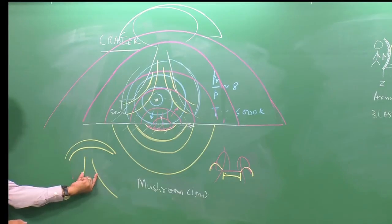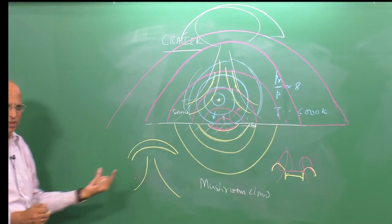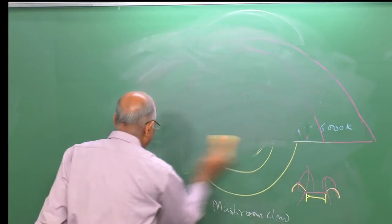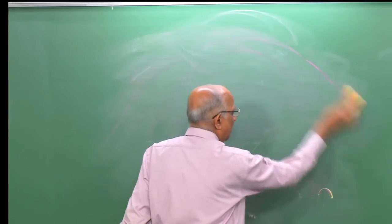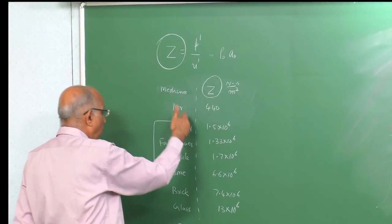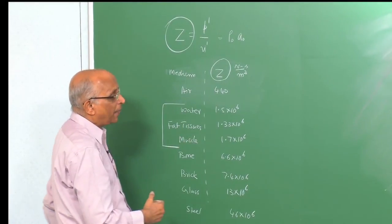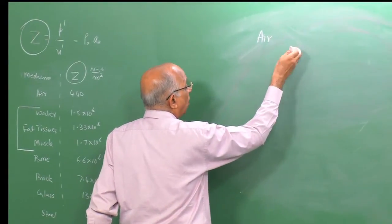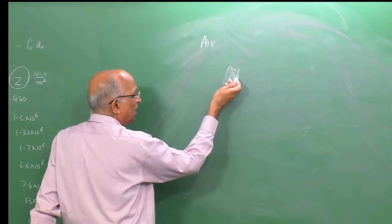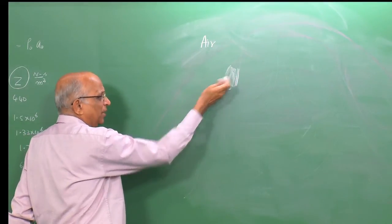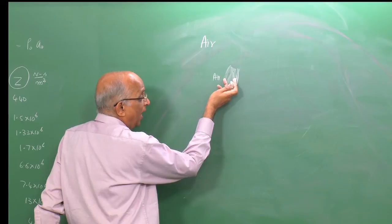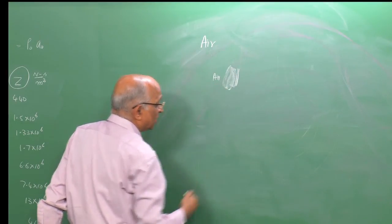An explosion above the surface produces a mushroom cloud — this is the signature of an explosion. Now, putting impedances together for the human body: parts of our body contain air in addition to water and tissues. Water and tissues have similar impedances around 1.2–1.7 × 10⁶ N·s/m³. But if there is air present, there is a radical impedance mismatch which can cause destruction via expansion and tensile failure.